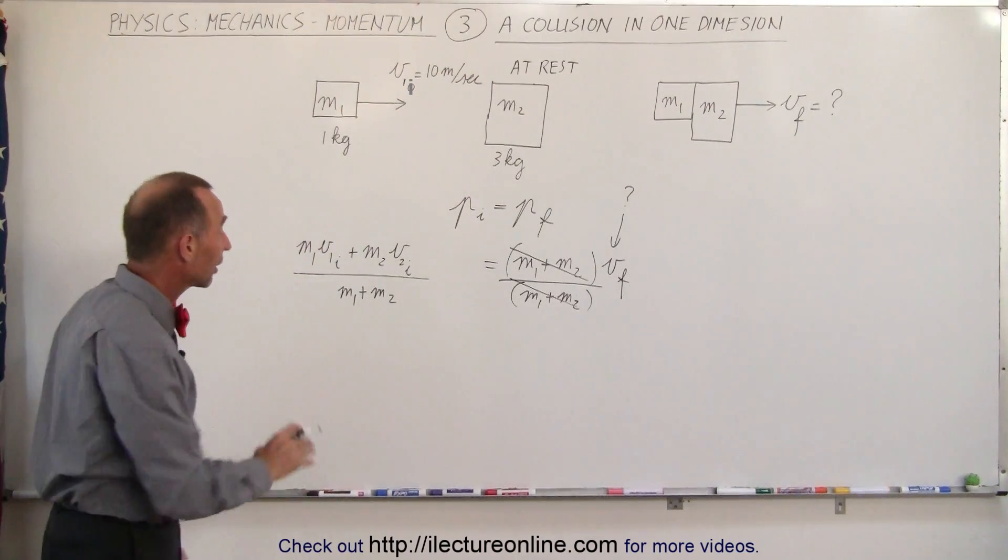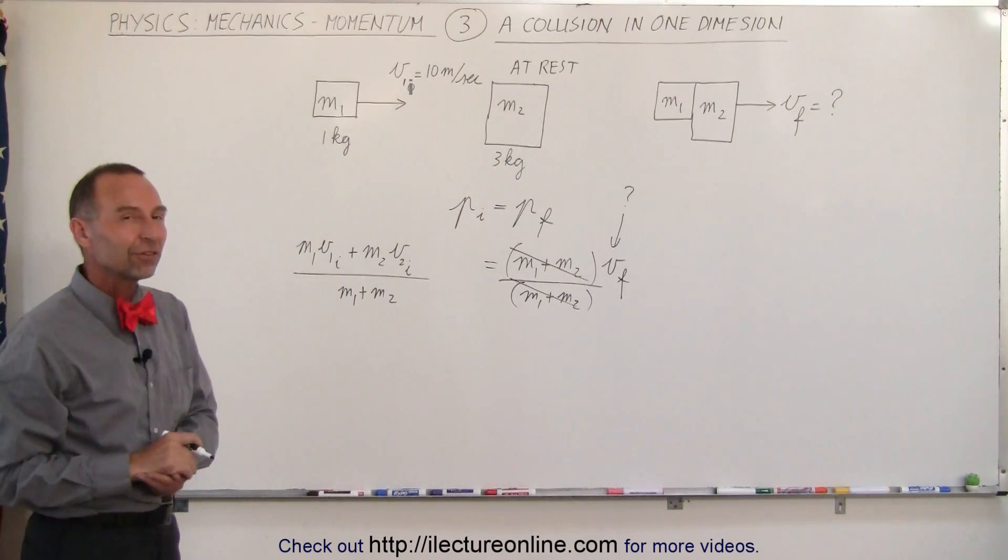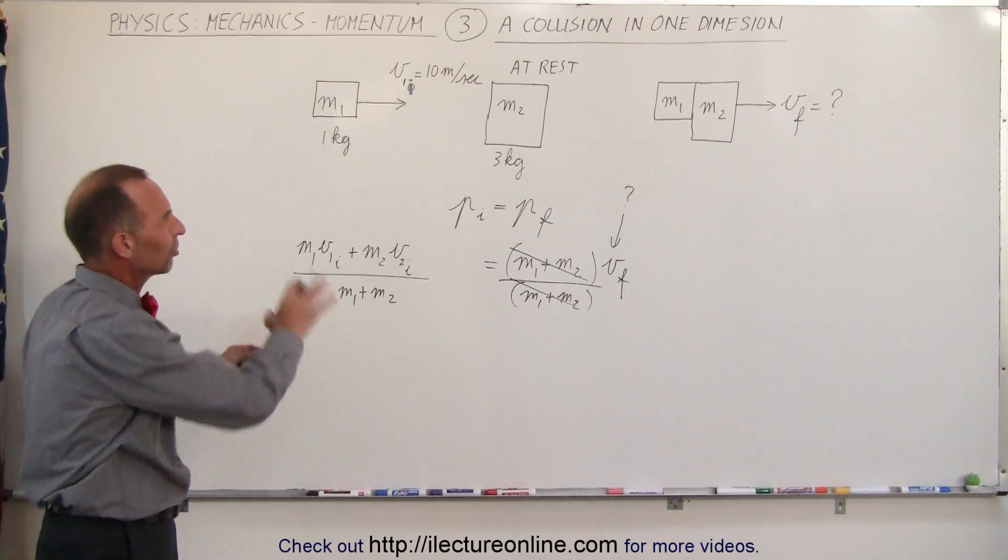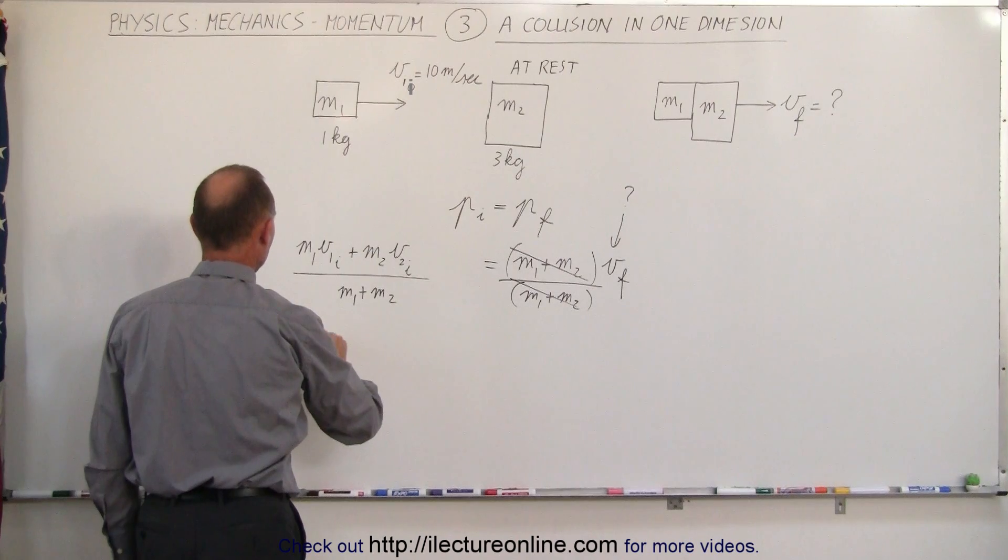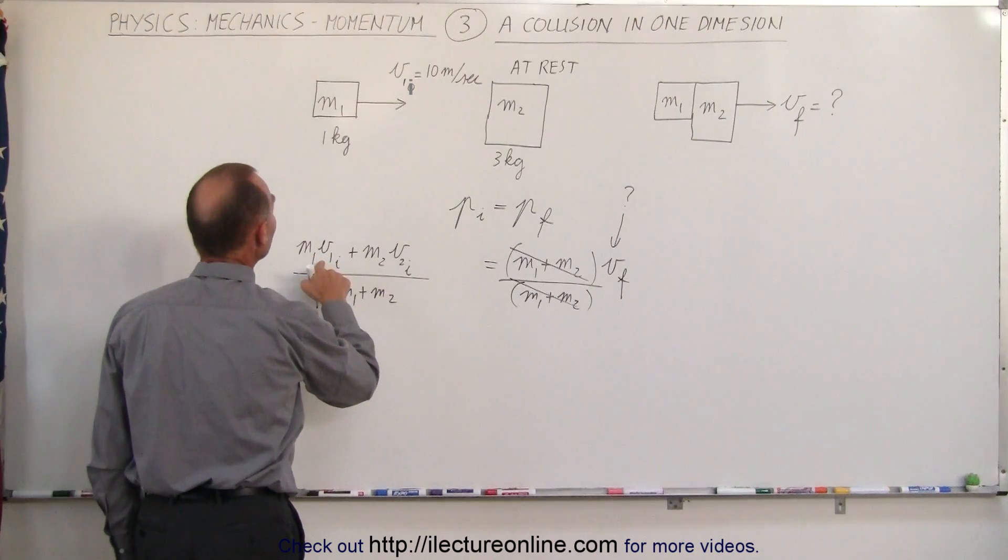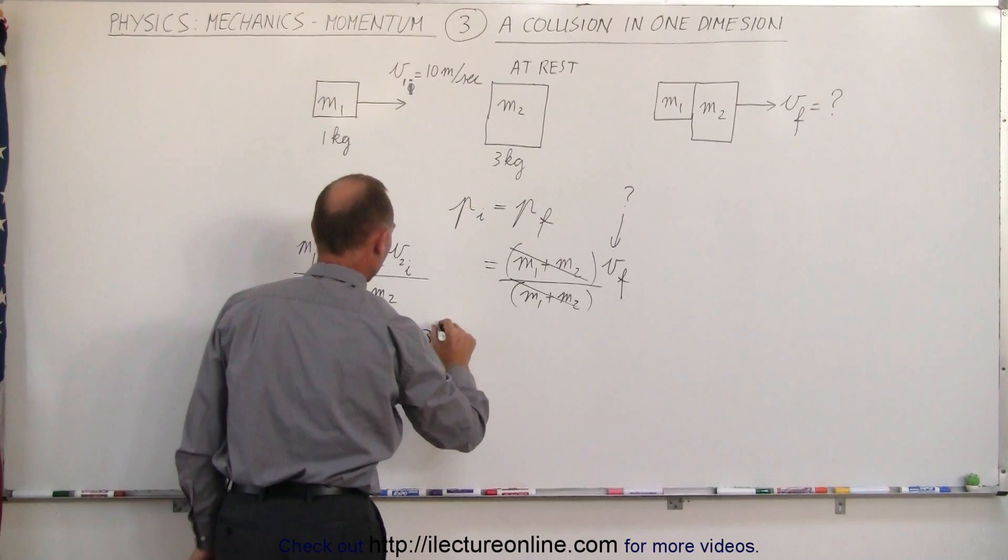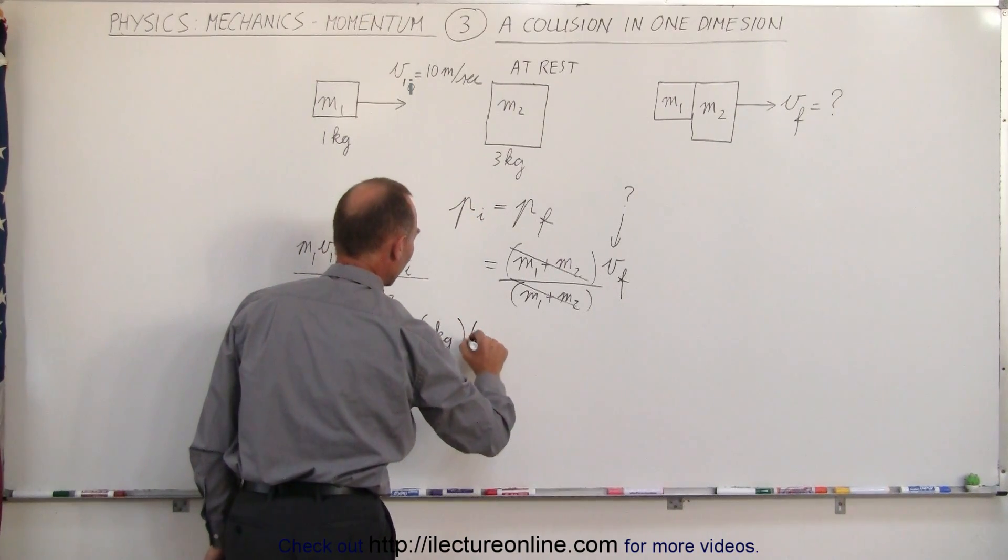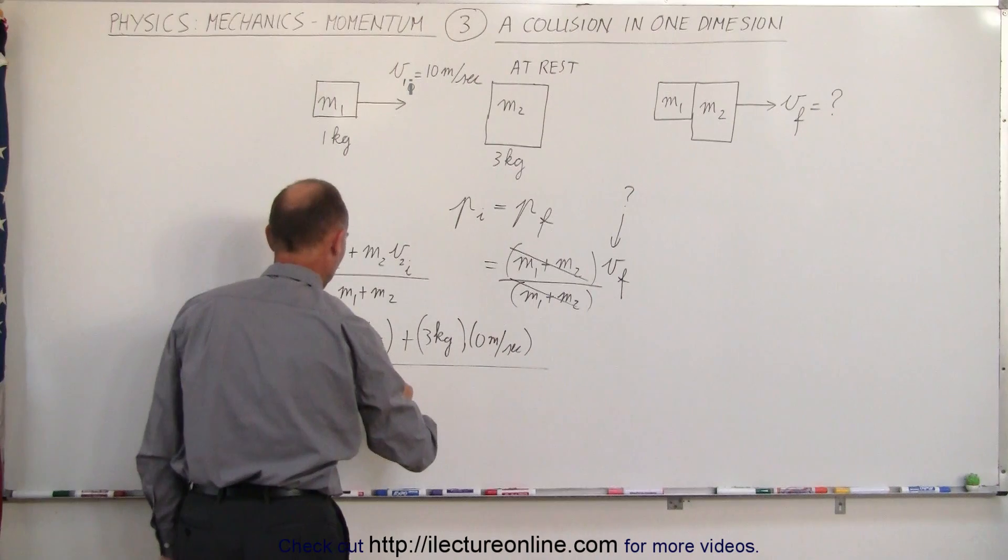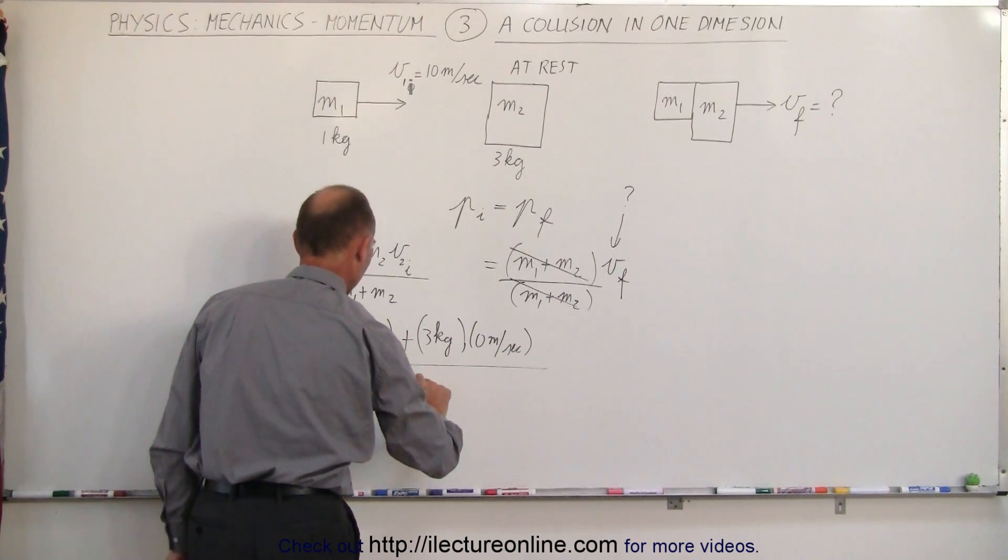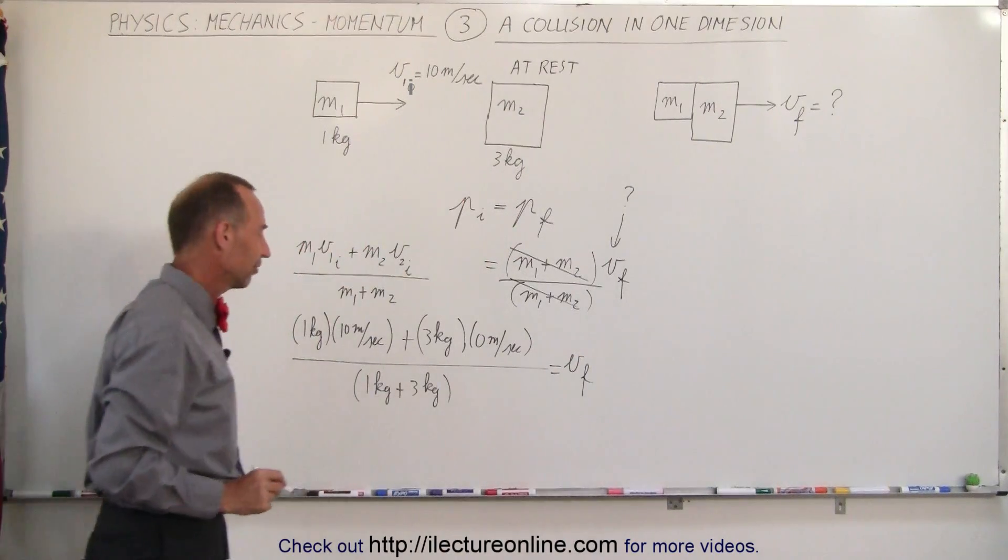Now all we have to do is plug in what these things are. Keep in mind that direction is important - to the right is positive, and to the left is negative. But to make it easier, all our velocities will be positive to the right. M1 is 1 kilogram times V1 initial, which is 10 meters per second, plus M2, which is 3 kilograms times 0 meters per second, because initially it was at rest, all divided by the sum of the two masses, which is 1 kilogram plus 3 kilograms. And that should equal the final velocity of the whole system.